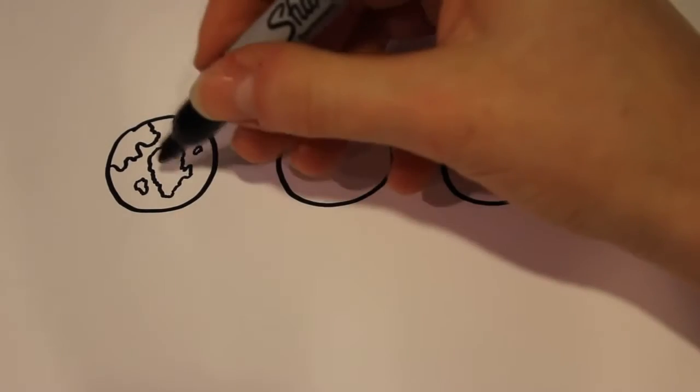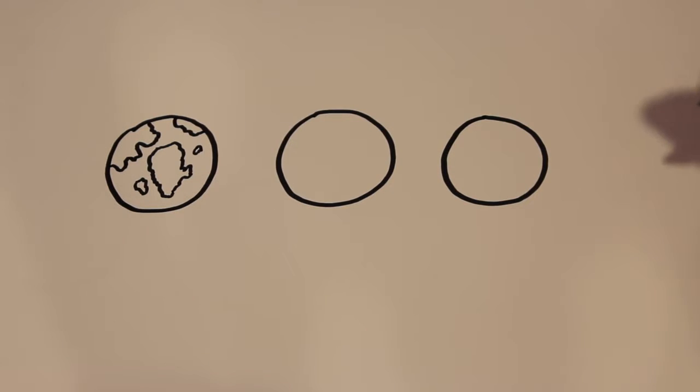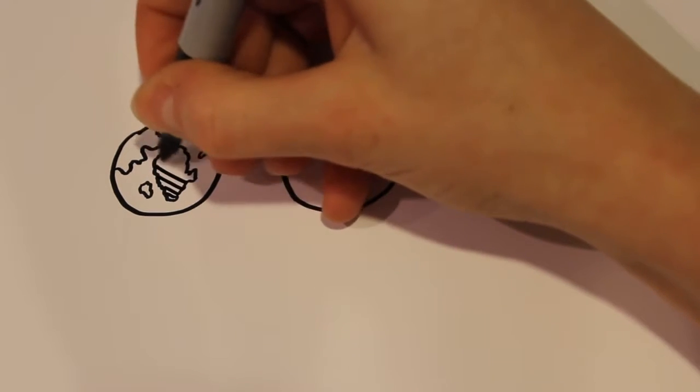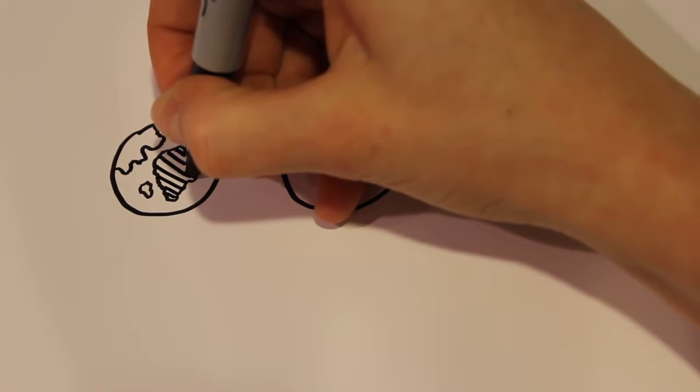And then of course this is going to be green and this can be blue. But for now, if you're just drawing it black and white, I'm going to shade these in using lines.